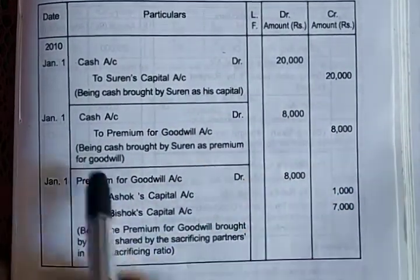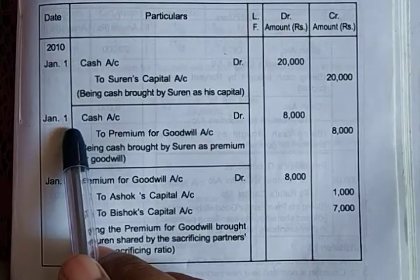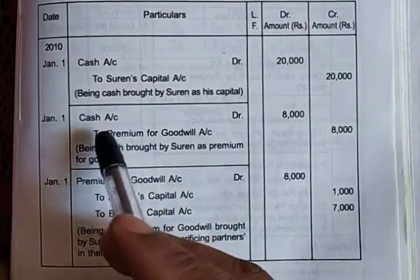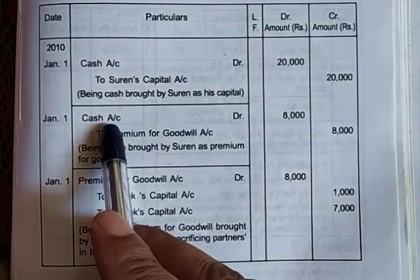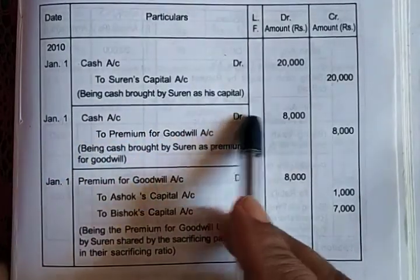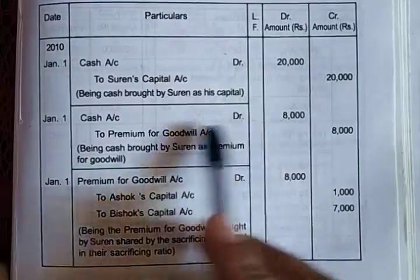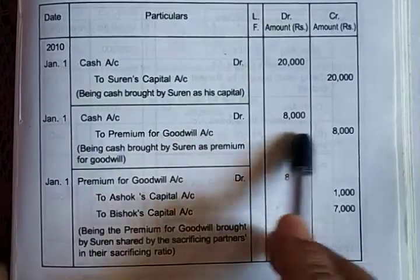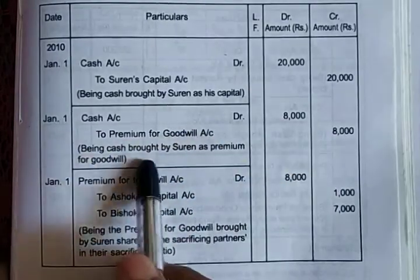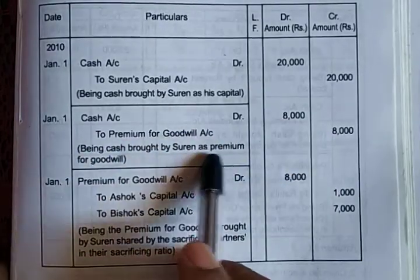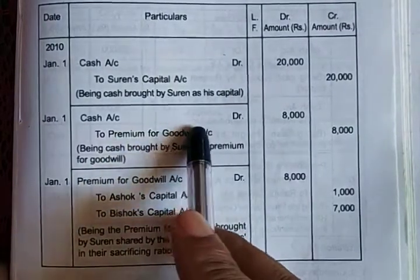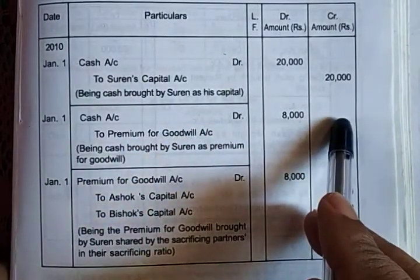In the books of the firm - journal, date, particulars, ledger folio, debit and credit. First, the new partner brought capital. 2010 January 1: cash account debit 20,000 - because cash increases, assets increase, so debit. Capital increases, so credit: to Surin's capital account 20,000 rupees. Narration: being cash brought by Surin as his capital.